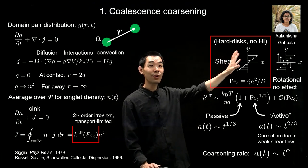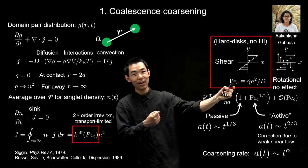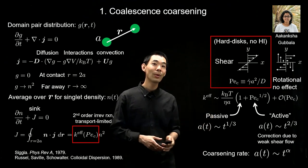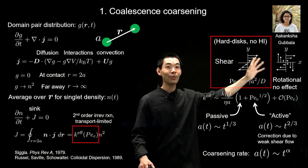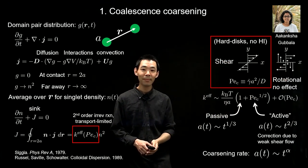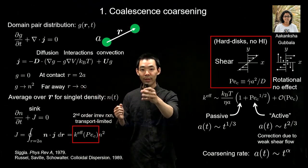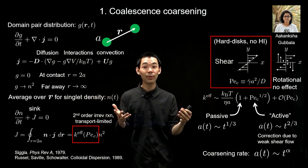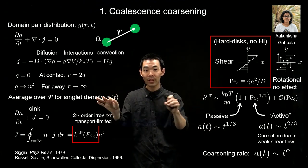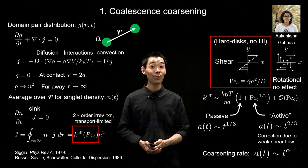Rotational flow has no impact on coarsening — it stays at t^(1/3) — because rigid body rotation doesn't change the relative distance between domains, so it doesn't change the collision rate. Extensional flow is just the difference between shear flow and rotational flow, so extensional flow behaves the same as shear flow. In our system, there is a combination of shear, rotational, and extensional flows, and this argument tells us that even with a weak amount of active flows, you can dramatically enhance the coarsening rate — consistent with our t^(2/3) scaling.